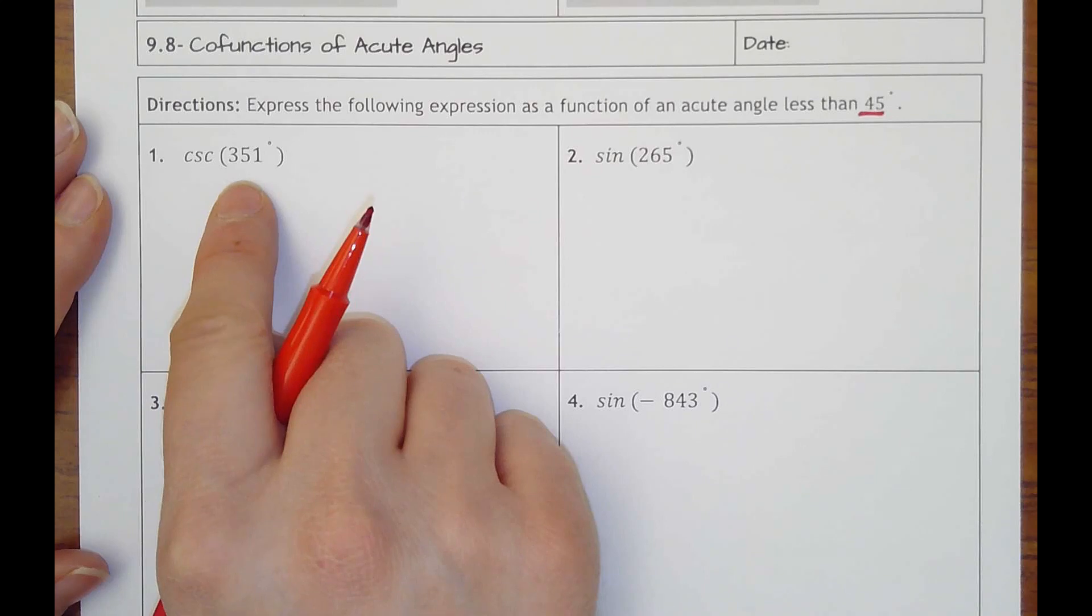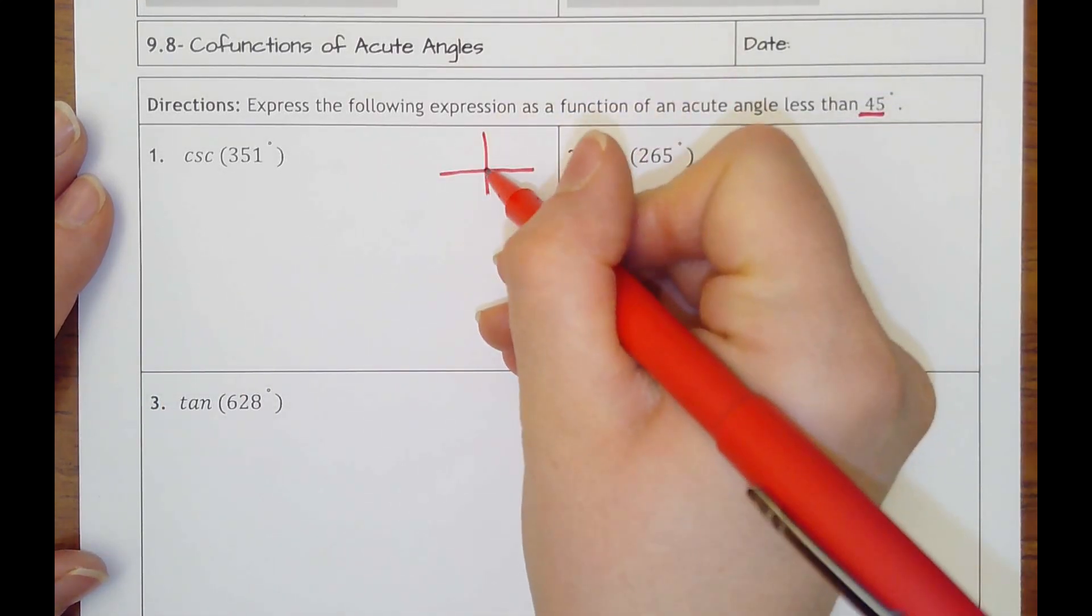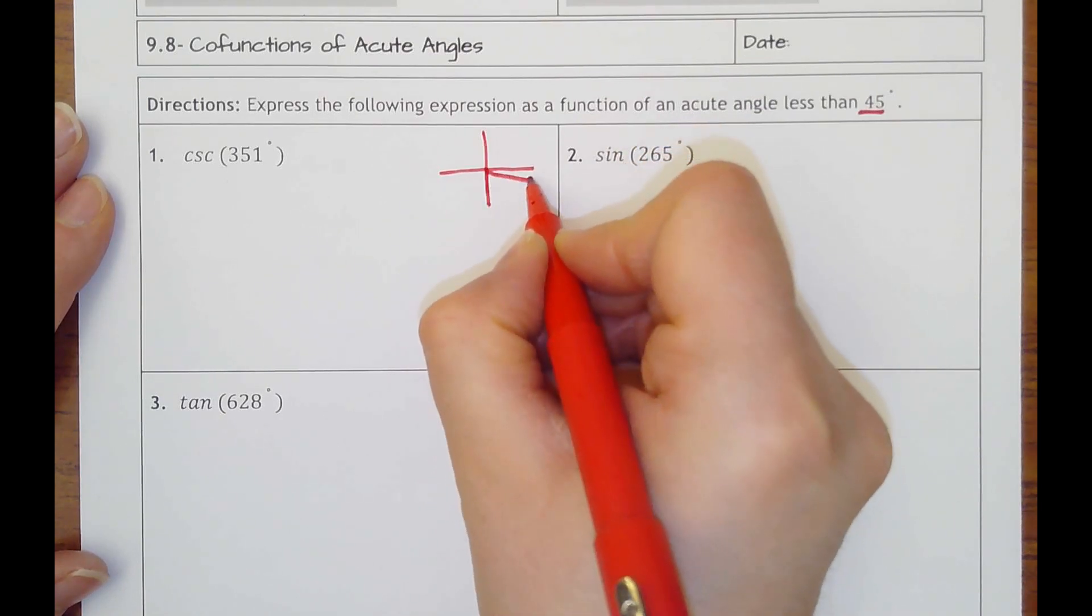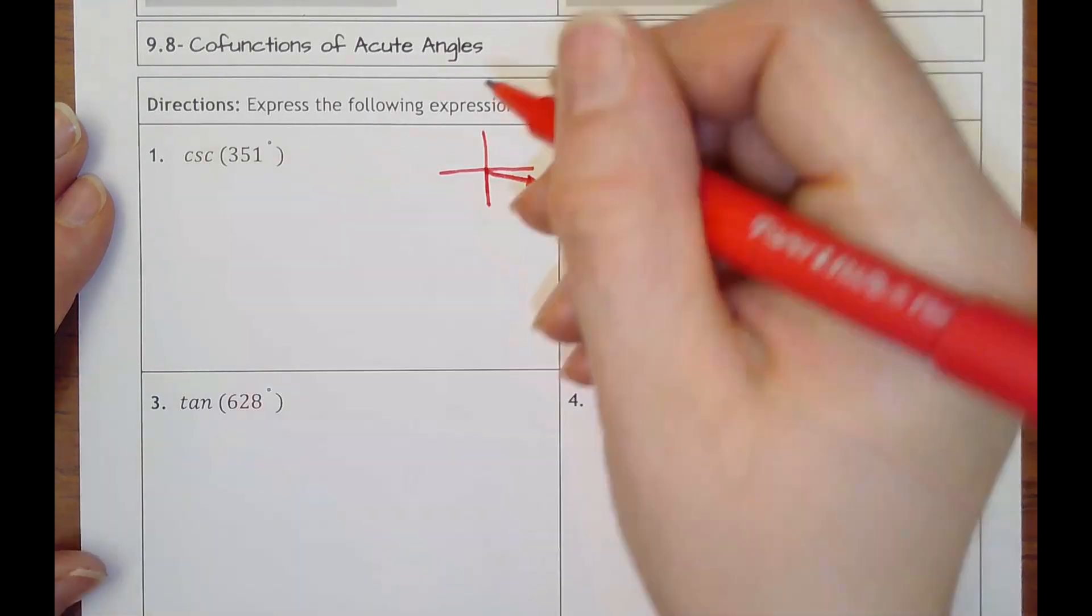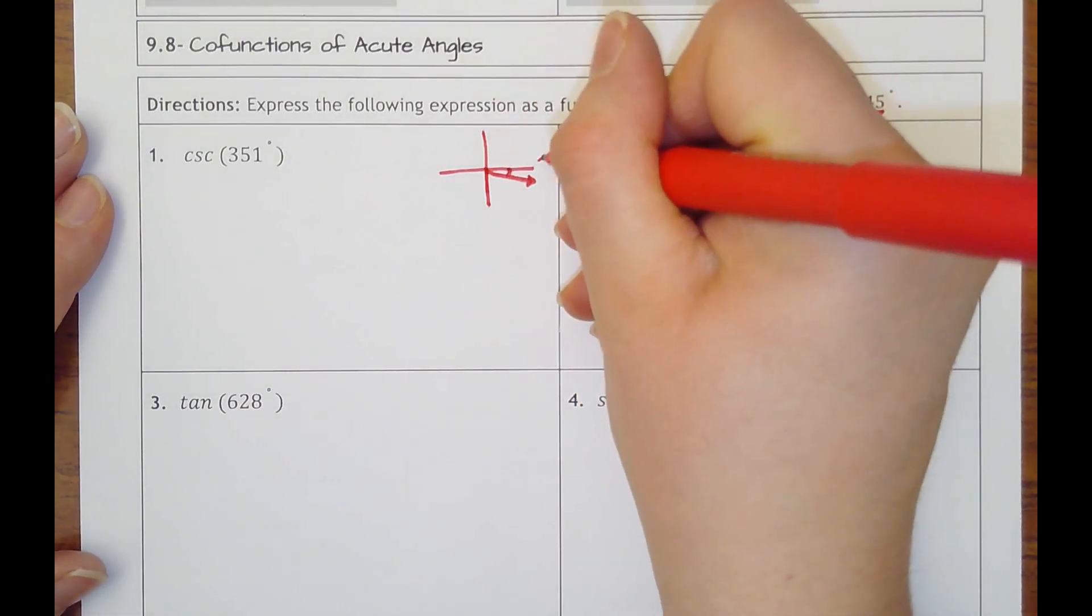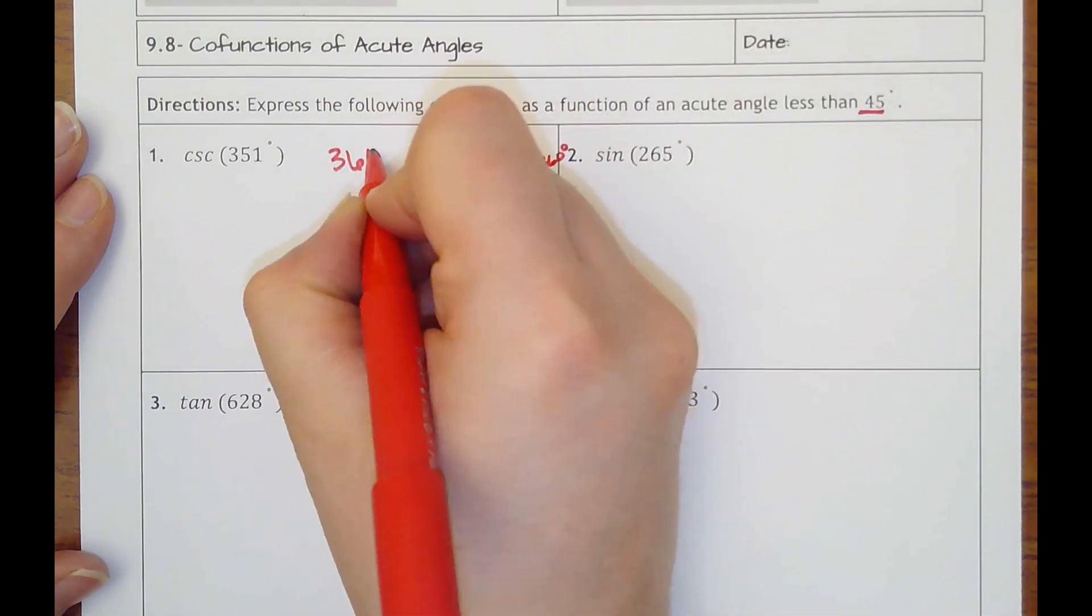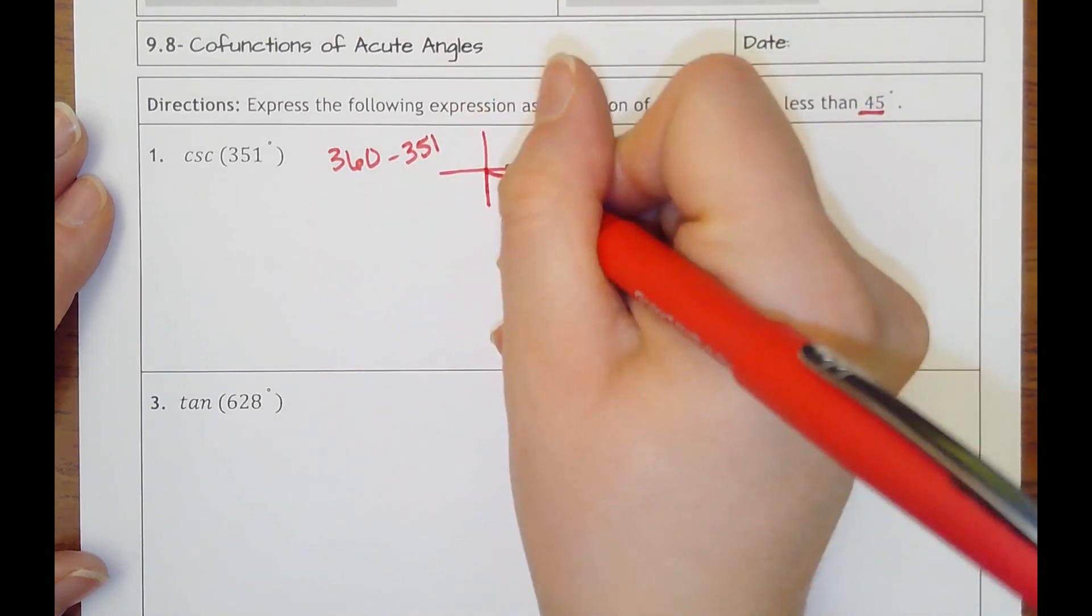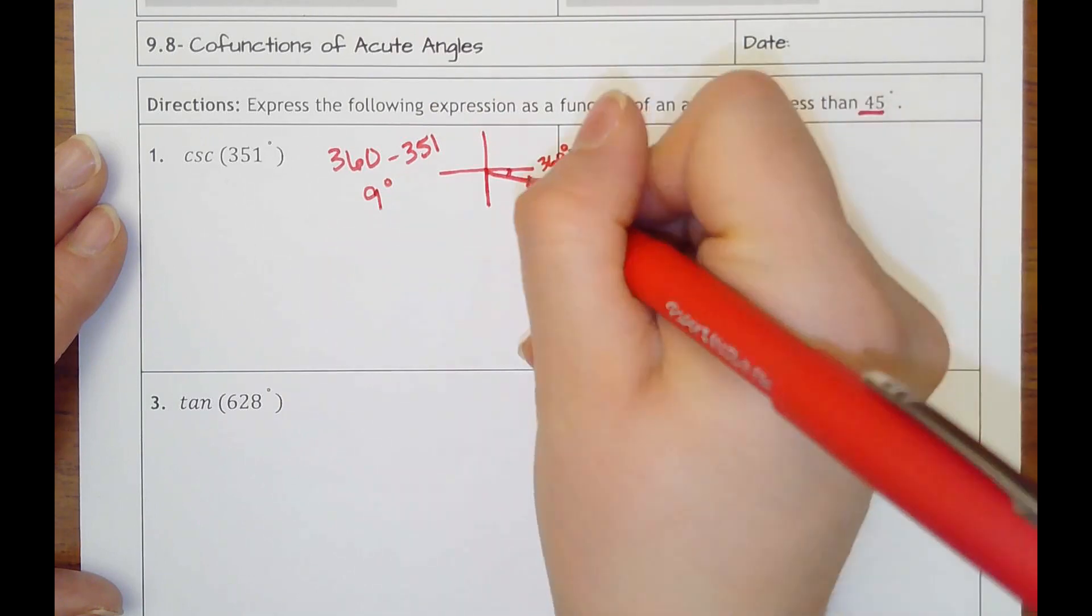So 351, think about where that is on our unit circle or on a coordinate plane. 351 is not quite 360. It's right here, really close. And so our reference angle could be found by taking the 360 minus 351, which tells me that reference angle is 9 degrees right here.